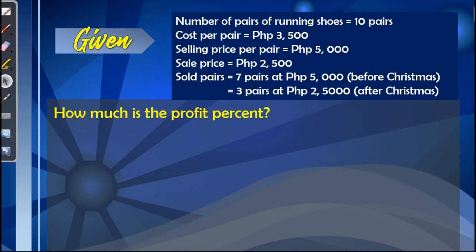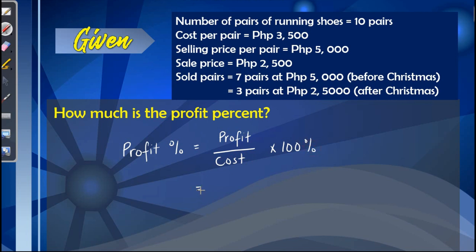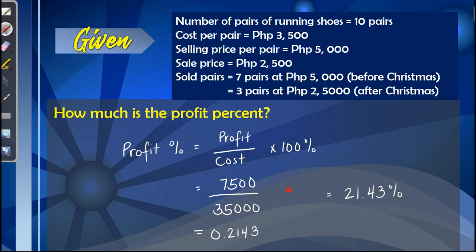The next question is: how much is the profit percent? Since we know the total profit is $7,500, we can find the profit percent using the formula: profit divided by cost times 100%. The profit is $7,500 and the cost of the 10 shoes is $35,000. Getting the ratio gives 0.2143, or 21.43%. The profit percent is 21.43%, representing the gain based on the cost of the 10 pairs.